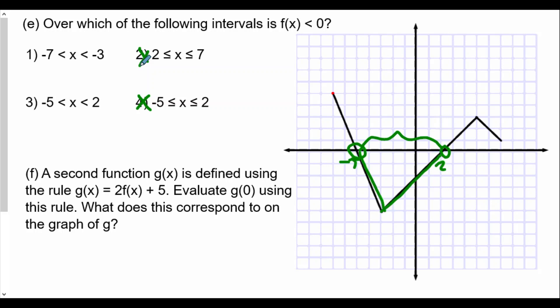So again, this is really going to be below the x-axis. Where is the graph below the x-axis? We'll take a look at choice one. Negative seven is less than x, less than negative three. Well, definitely between negative five and negative three, we have below the x-axis, but not including negative seven, so definitely not this. It is definitely choice three here. Negative five is less than x is less than two.